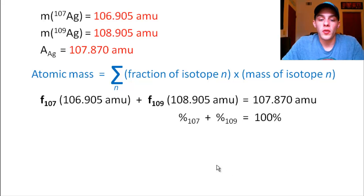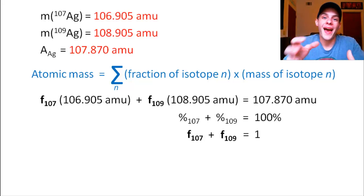So there it is. In other words, the percentage of silver-107 plus the percent abundance of silver-109, that has to be 100%. And to convert those percentages into fractions, basically all we have to do is divide by 100 because that's what a percentage is. It's just the fraction multiplied by 100. So in other words, if we divide this whole equation by 100, we're going to get the fraction of silver-107 plus the fraction of silver-109 is equal to 1, which makes sense. All of the fractions added together should equal the whole, which is 1.